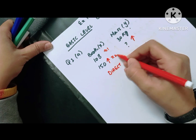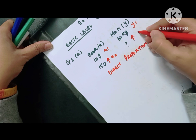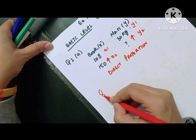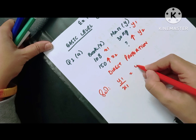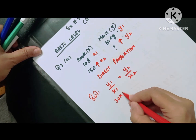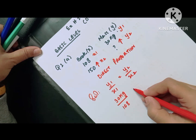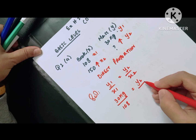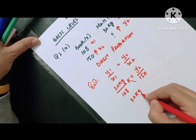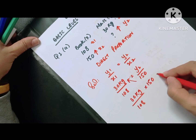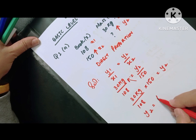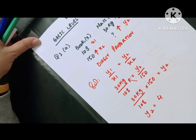We label the values as x1, x2, y1, and y2. For direct proportion, the formula is y1 over x1 equals y2 over x2. Putting in the values: 30 kg divided by 108 equals y2 divided by 150. Shifting 150 across gives us 30 kg divided by 108 multiplied by 150, which equals y2.